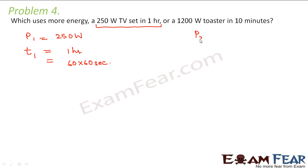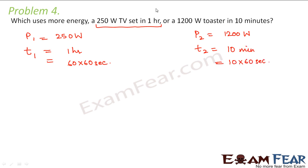Now for the toaster, power is given as 1200 watts and time is given as 10 minutes, so 10 minutes would mean 10 into 60 seconds. We know that power is nothing but work done per unit time, that means energy per unit time. Therefore, we can say that energy is equal to power into time taken.